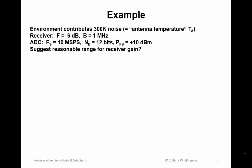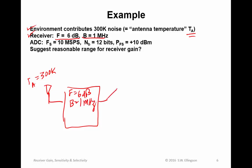So, an example. In this example, the environment contributes 300 Kelvin of noise as antenna temperature. So here's an antenna contributing 300 Kelvin, and then we have a receiver with a noise figure of 6 dB, having a bandwidth of 1 MHz. Then we have an analog-to-digital converter with a sample rate of 10 MHz per second, 12 bits output, and full-scale power of plus 10 dBm.